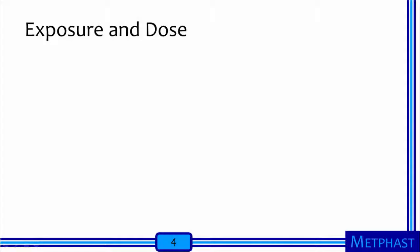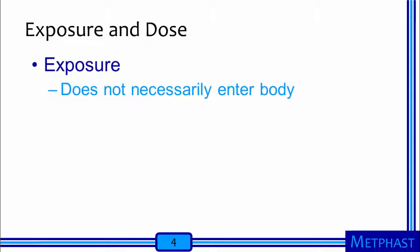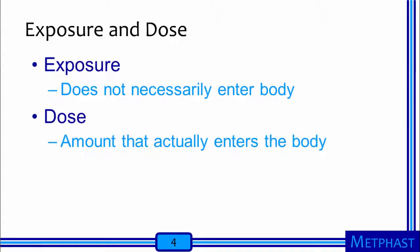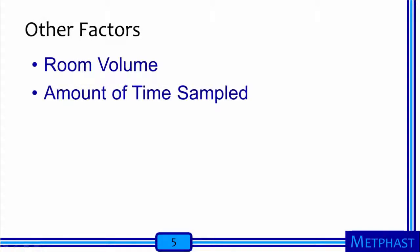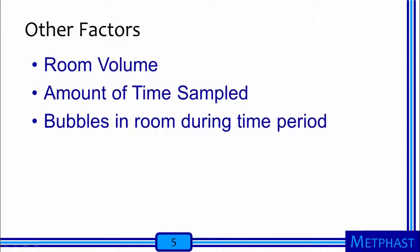The main point of this activity is to highlight the differences between exposure and dose. Exposure is an agent that people are exposed to but does not necessarily enter their body, while dose is the amount of an agent that actually comes within the body. Other things to think about are what factors affect the exposure and dose, for example, the room volume, the amount of time sampled, and the amount of bubbles in the room during this time.